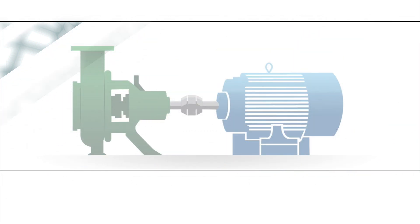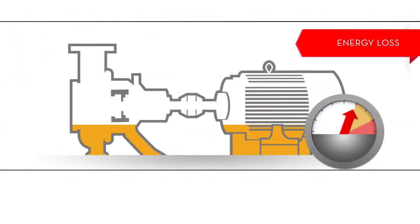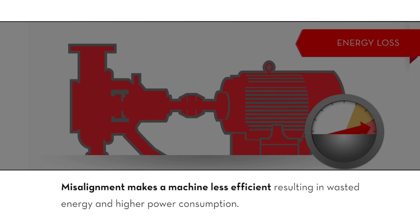Number three: energy loss. Misalignment makes a machine less efficient, resulting in wasted energy and higher power consumption.